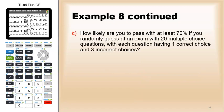How likely are you to pass with at least 70 percent if you randomly guess an exam with 20 questions where there is one correct choice and three incorrect choices? So in this case, the probability is 25 percent chance of getting it correct.